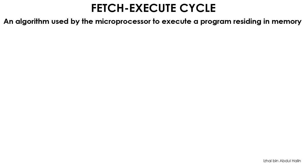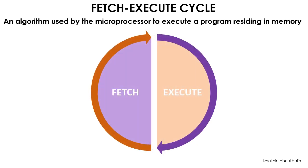Here, we would like to explain how a program in memory is executed by the 68k microprocessor using an algorithm called the fetch and execute cycle. There are only two parts to this algorithm, as shown in the picture here. The first is the fetch cycle and is followed by the execute cycle. These two cycles are repeated during the course of program execution.